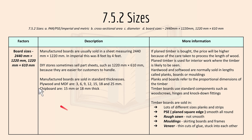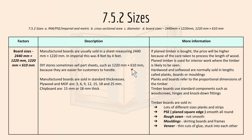Lastly we have board sizes. Manufactured boards are usually sold in sheets measuring 2440mm × 1220mm, which in imperial is 8 feet by 4 feet. DIY stores sometimes sell part sheets such as 1220mm × 610mm because they are easier for customers to handle. Manufactured boards are sold in standard thicknesses — plywood and MDF come in 3, 6, 9, 12, 15, 18, and 25mm. Chipboards are 15mm and 18mm thick.